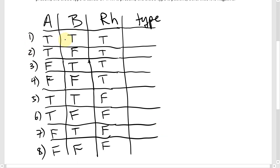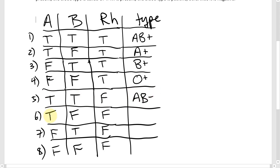If you have all three antigens, that's AB positive. A with no B but with RH is A positive. No A but B and RH is B positive. No A and no B but RH only is O positive. A and B but no RH is AB negative. A only is A negative. B only is B negative. And no antigens at all is O negative.